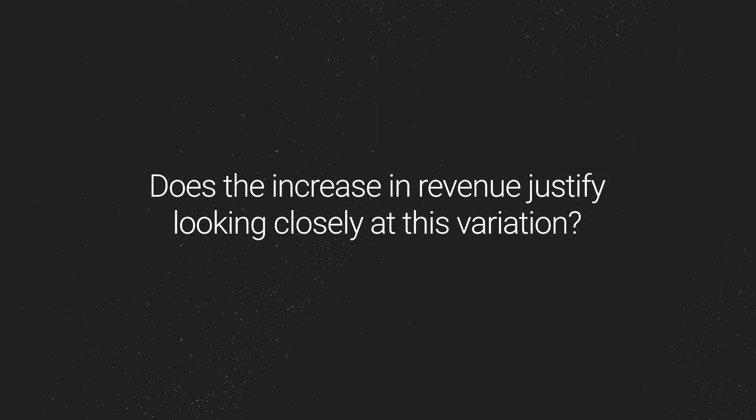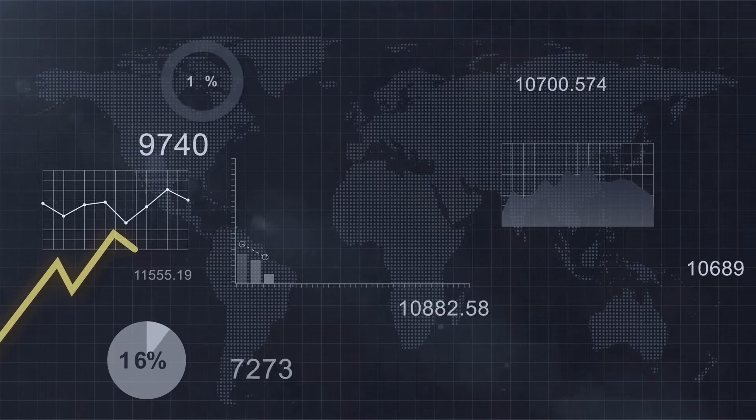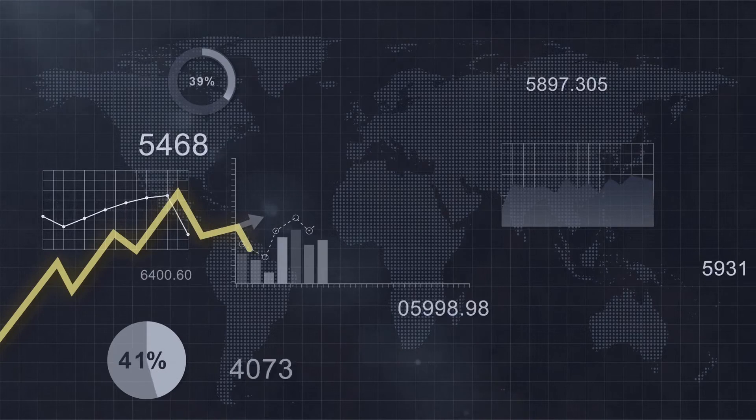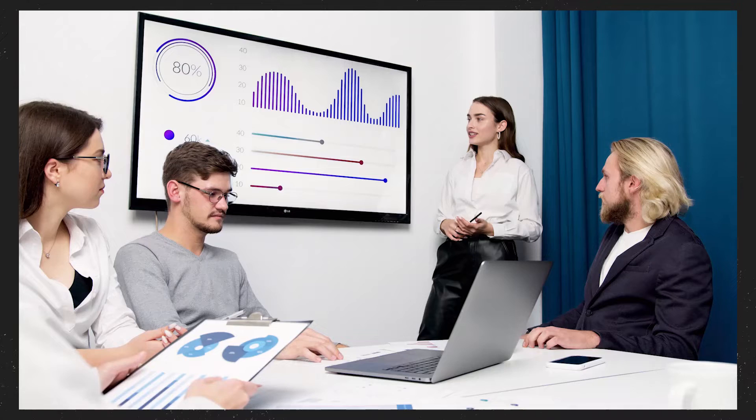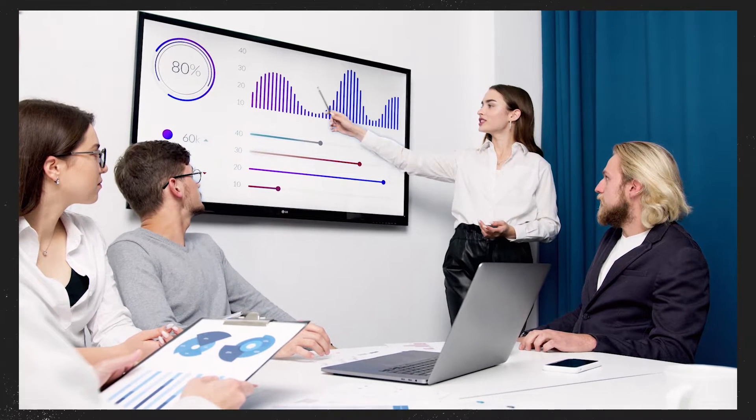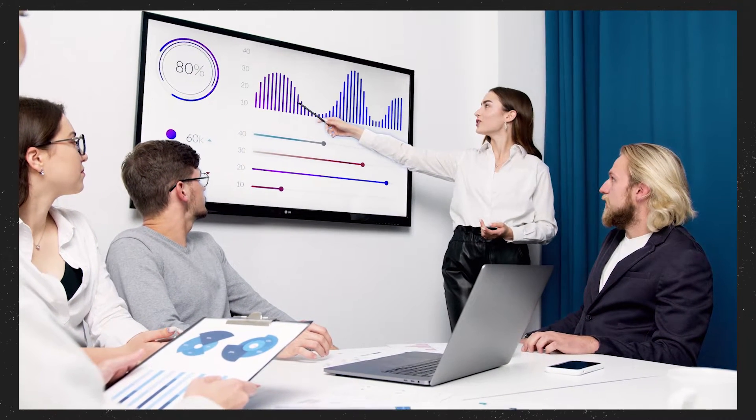A third scenario is a variation that lost in conversions but shows an increase in revenue. Does that increase in revenue justify looking more closely at this variation? This analysis is done based on the numbers, but there's another side to combine with the numbers — looking at the designs and the direction the business is going. Sometimes one of your variations represents the direction the business is heading or a vision you want to pursue. For example, making changes to a product page now because more changes are being built on top of this in the coming months — that's a business decision, not purely an optimization decision, but it's important to evaluate those variations and look at the numbers.